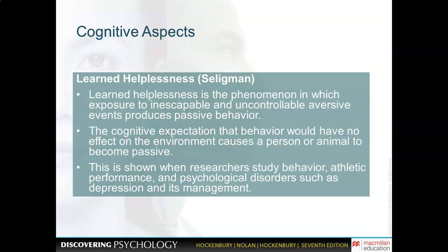Some cognitive aspects of learning include learned helplessness — when one is repeatedly exposed to uncontrollable or inescapable aversive events, the person says 'what's the point, it never turns out right, I'm just going to give up.' That's called learned helplessness.